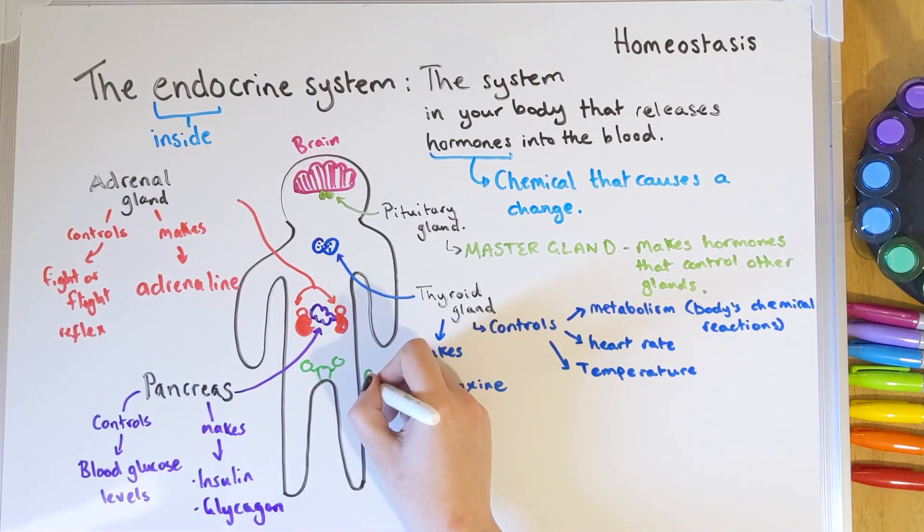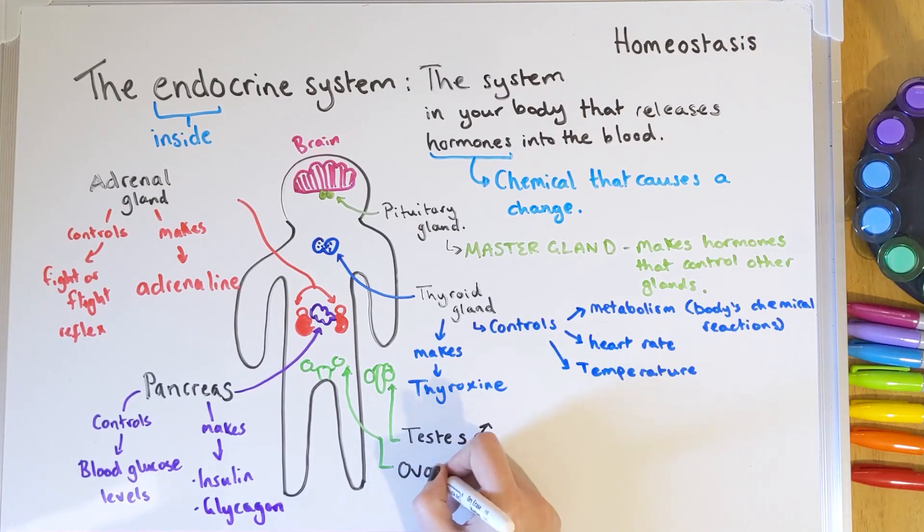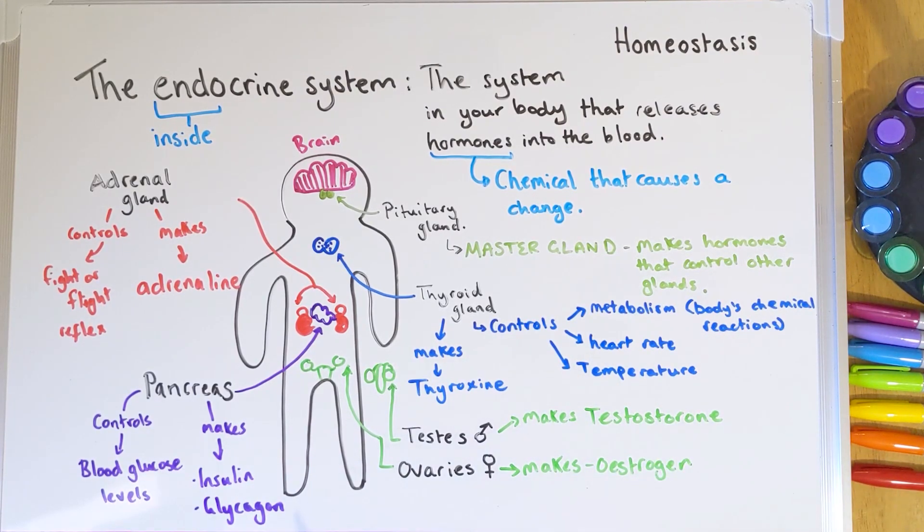The last two glands are gender specific: the testes and the ovaries. Testes produce testosterone, the male sex hormone; ovaries produce estrogen, the female sex hormone. Testosterone is used for sperm production and to trigger puberty in males. Estrogen is used to thicken the uterus wall and set off some of the chain reactions in the menstrual cycle, which we'll look at in another video, as well as trigger puberty in females.